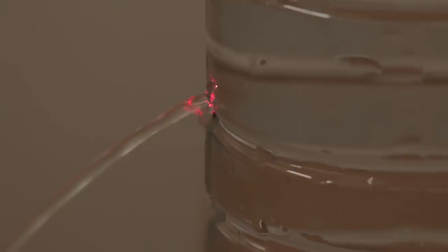This is called total internal reflection. It cannot pass from the dense water going to the less dense air. Instead, it follows the stream, bending with the water. Similar to the way fiber optic cables work.